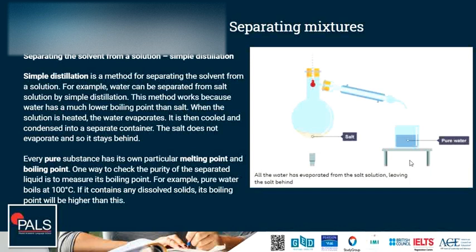Something to add here is that every pure substance has its own particular melting and boiling point. One way to check the purity of the separated liquid is to measure its boiling point — to check whether we really have pure water or still salt water. Every pure substance has a fixed boiling point. If it contains dissolved solids, its boiling point will be higher and over a range.